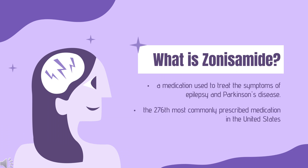Zonisamide, sold under the brand name Zonegran among others, is a medication used to treat the symptoms of epilepsy and Parkinson's disease. Chemically, it is a sulfonamide. In 2020, it was the 276th most commonly prescribed medication in the United States, with more than 1 million prescriptions.